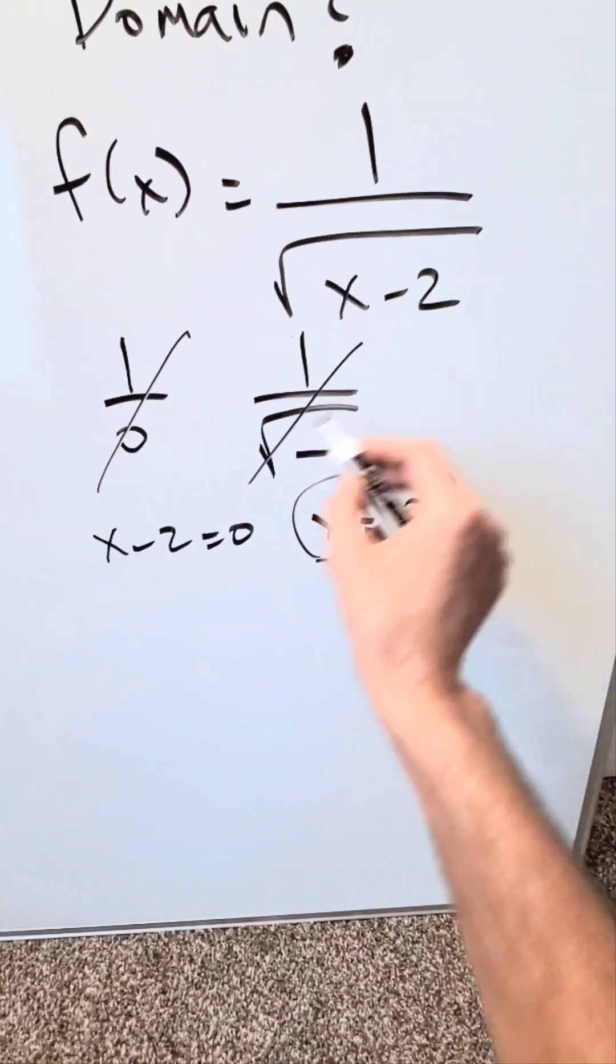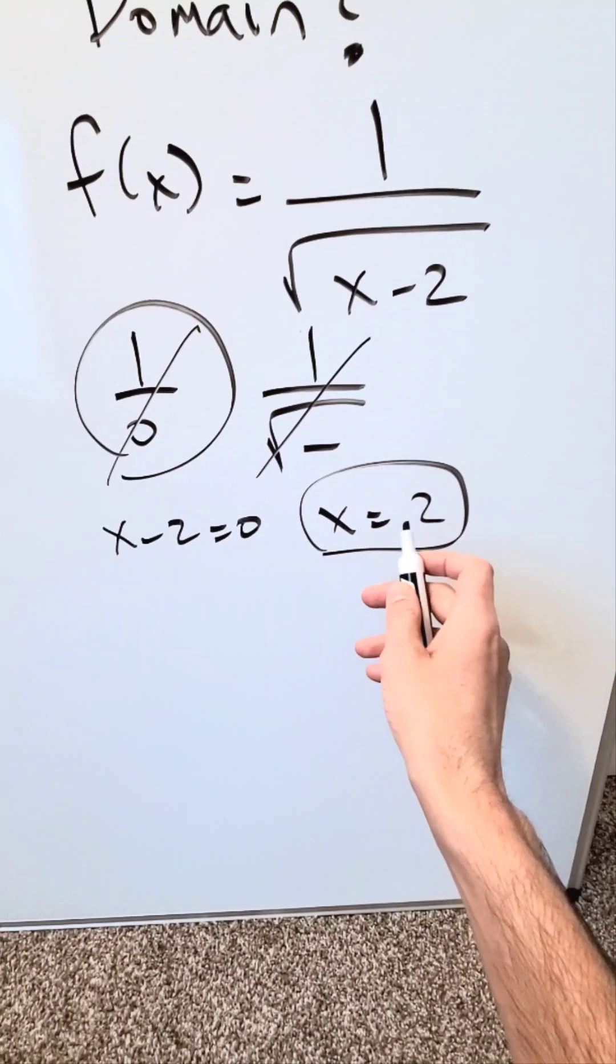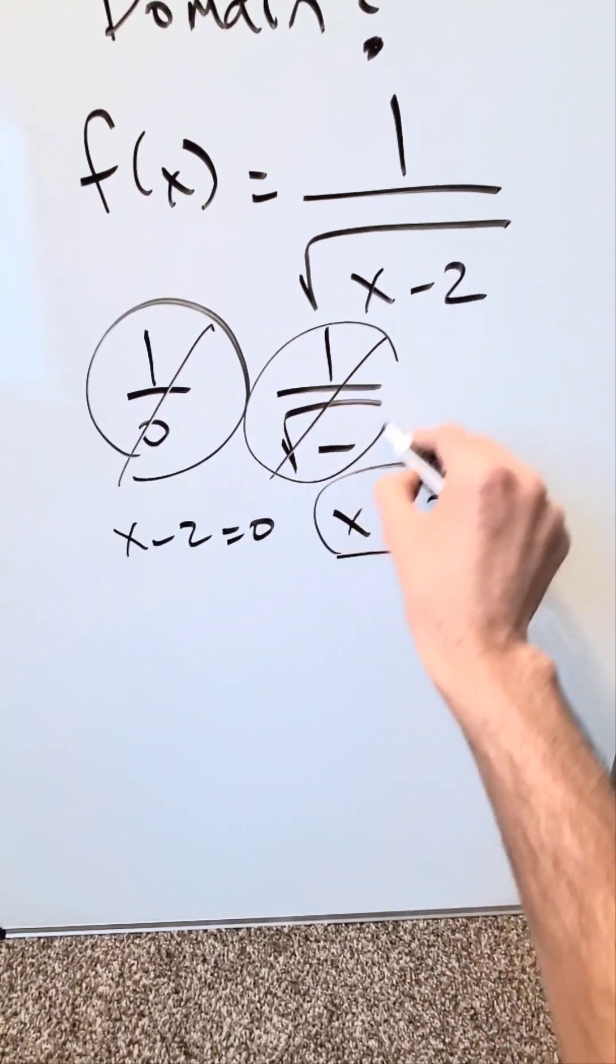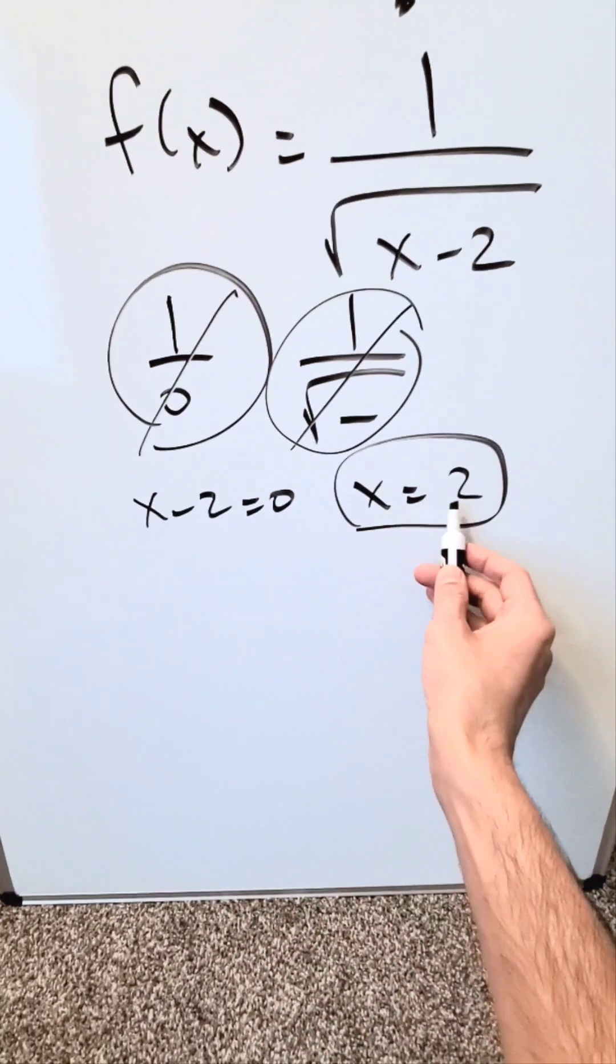If you were to put 2 in place of x, you'll end up with this scenario. If you look at any value less than 2, like 1, 0, or negative numbers, you'll end up with this scenario. So you know negative numbers are out and 2 is out.